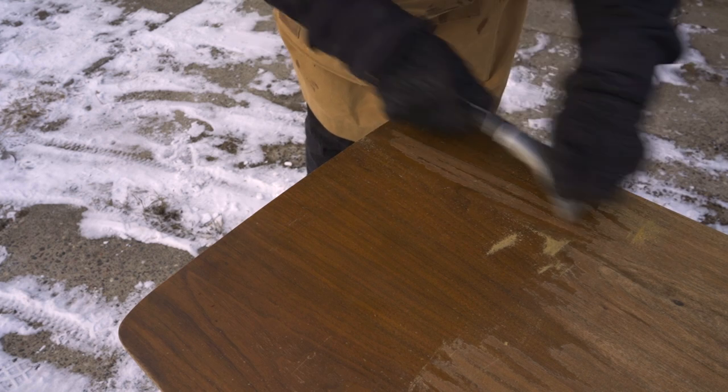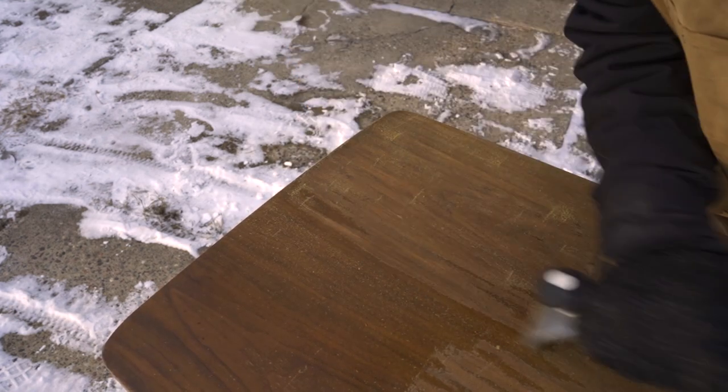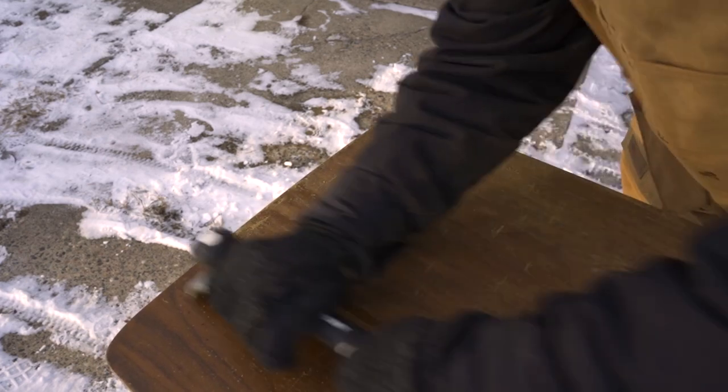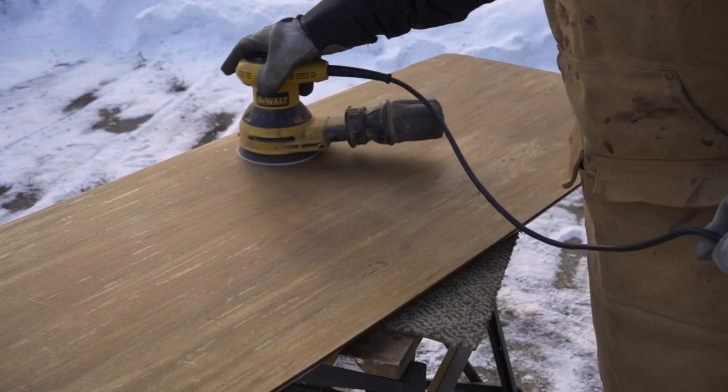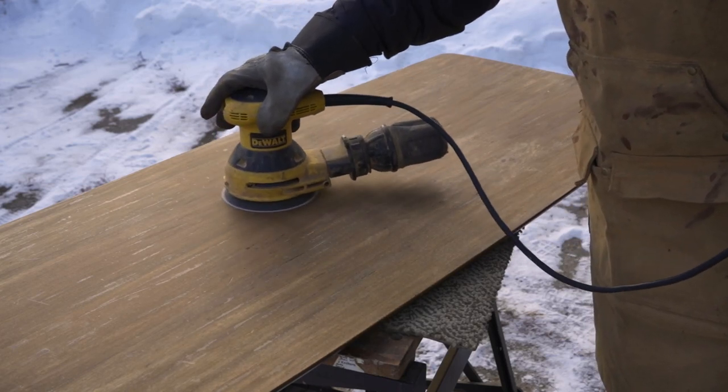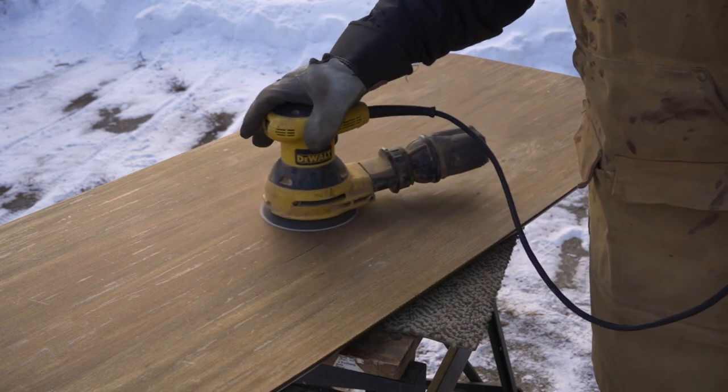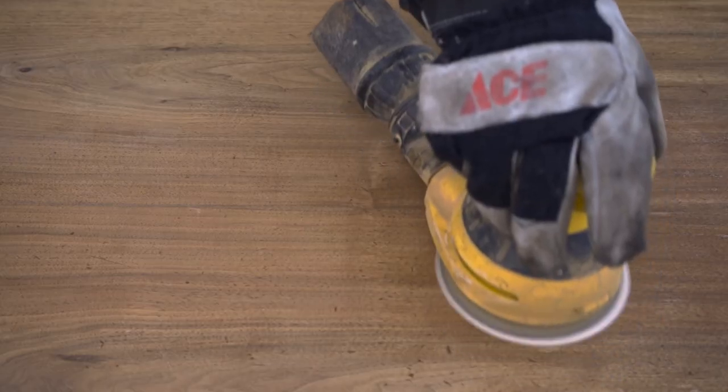And again I used a scraper followed by some sanding. This top is a veneer, so I had to be really careful to only do as little sanding as I had to so that I didn't sand through the veneer. Which is why I scraped it first. It reduces the amount of sanding that I have to do.